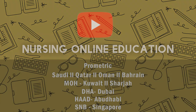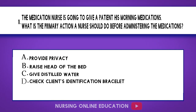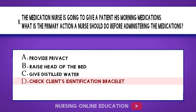Question 1. The medication nurse is going to give a patient his morning medications. What is the primary action a nurse should do before administering the medications? A. Provide privacy. B. Raise head of the bed. C. Give distilled water. D. Check client's identification bracelet. The answer is option D: Check client's identification bracelet.